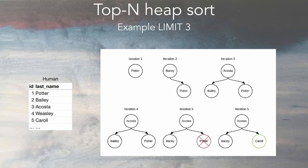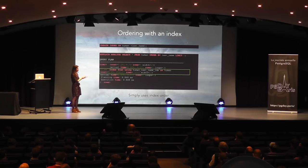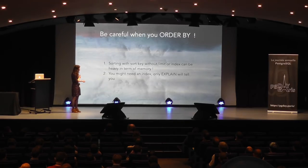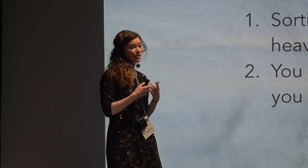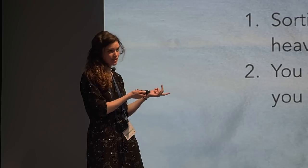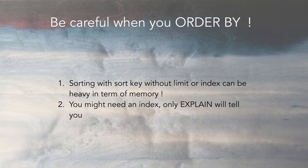If you have an index on your column — here I created one on human.last_name — the database simply uses the order of the index, which is really fast. Be careful about ordering: sorting without a LIMIT and without an index uses quicksort and can quickly become costly. Use EXPLAIN to confirm.